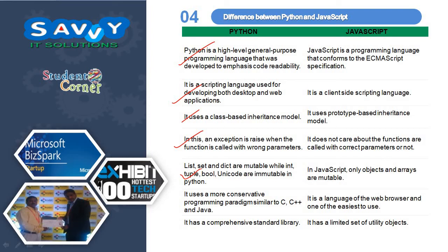bool and unicode are immutable in Python. In JavaScript, only objects and arrays are mutable. Python uses a more conservative programming paradigm similar to C, C++ and Java, while JavaScript is a staple of the web browser and one of the easiest to use. Python has a comprehensive standard library, whereas JavaScript has a limited set of utility objects.